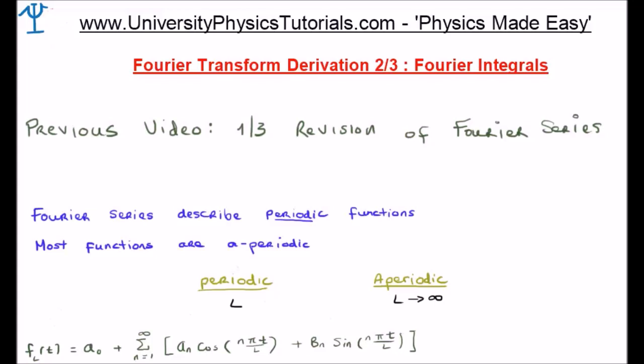So let's move on. Fourier series describe periodic functions. Most functions, however, are aperiodic. So how do we make a link between periodic functions and aperiodic functions? We can consider the period going to infinity and we can suggest that if the period goes to infinity, we have the link between a periodic and an aperiodic function.